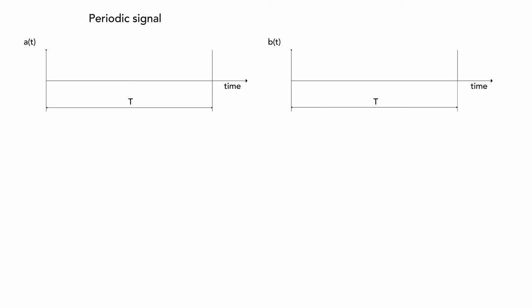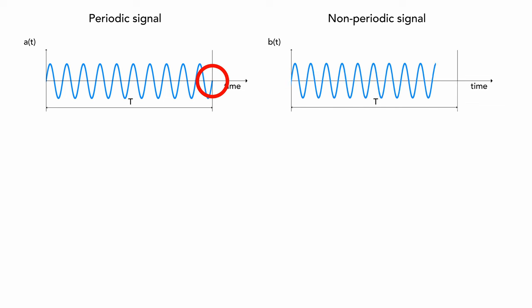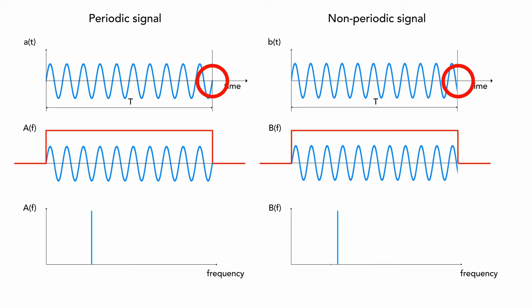However, the FFT has one limitation. All signal components must be periodic. If a non-periodic component is present, the FFT will incorrectly calculate its spectrum. We observe that when the signal is non-periodic, energy escapes, or leaks, into several spectral lines close to the actual frequency, causing the spectrum to spread over several lines. This phenomenon is called leakage.